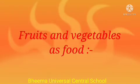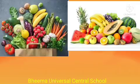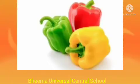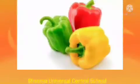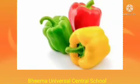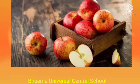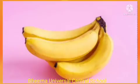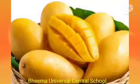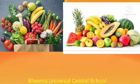Next is fruits and vegetables as food. Plants provide us varieties of fruits and vegetables. Tell me some names of vegetables. Very good — capsicum, tomato, brinjal, etc. Tell me some names of fruits. Very good — apple, banana, grapes, mango, etc. These vegetables and fruits are eaten either raw or cooked.